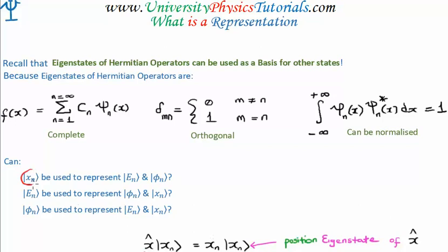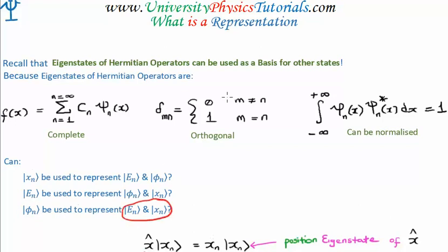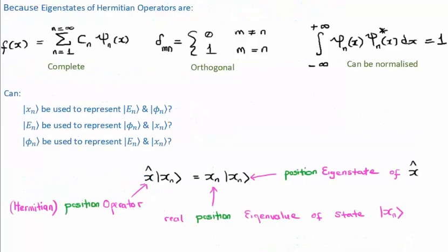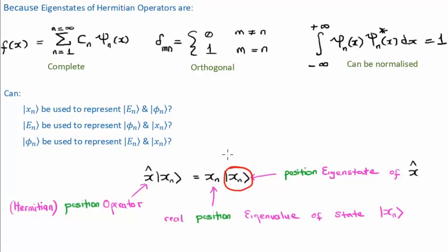Let's think about the position eigenstates, the x sub n's. Can the ket x sub n's be used to represent the energy eigenstates or the momentum eigenstates? Can the energy eigenstates be used to represent those for position and momentum? Or could the momentum eigenstates be used to represent those of energy and position? Can I take a linear combination of position eigenstates to represent the energy eigenstates or the momentum eigenstates?